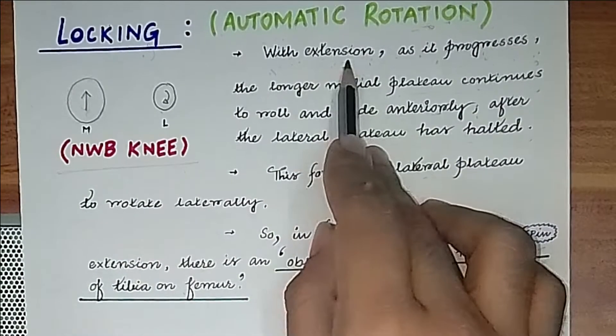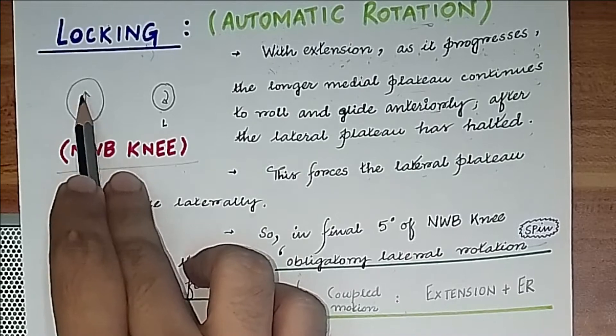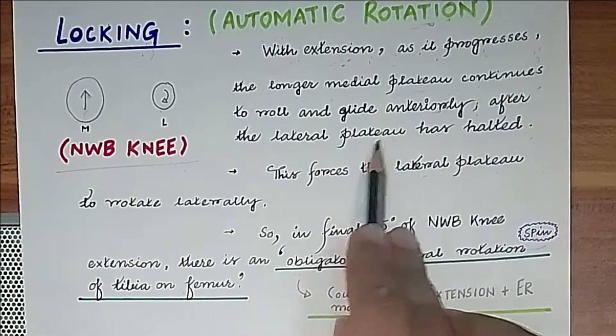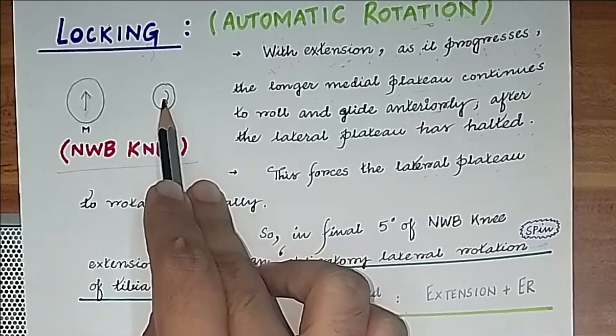Now in non-weight bearing knee extension, as it progresses, the longer medial plateau continues to roll and glide anteriorly after the lateral plateau has halted. This forces the lateral plateau to rotate laterally.